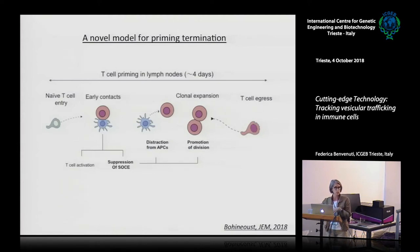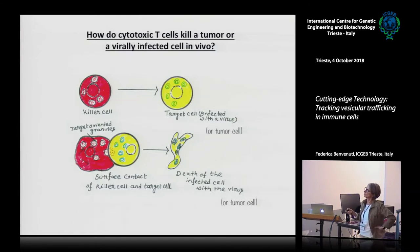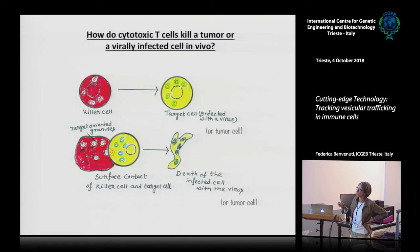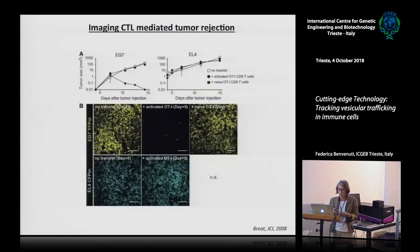That covers T-cell priming. But once a cytotoxic T-cell is primed, it has to find and kill its target. This is a second question addressed by two-photon approaches: looking at killer T-cells eliminating virally infected cells or tumor cells. There were many open questions: where does killing occur, how many contacts are needed, are CTLs directly killing tumor cells or recruiting bystander mechanisms? Two-photon microscopy allowed addressing some of these questions, and I'll show two examples: one for tumor cells and one for virally infected cells.